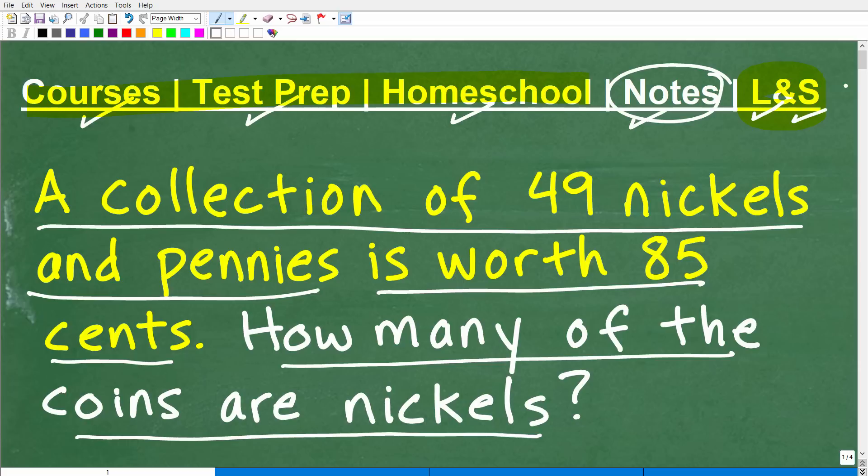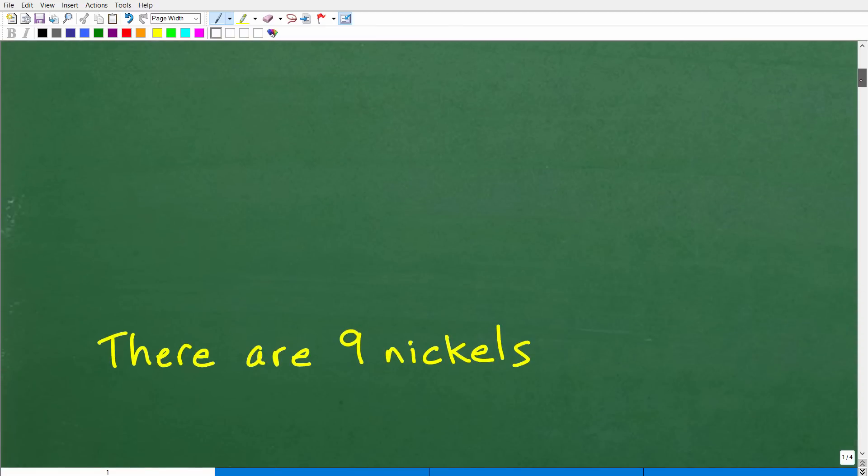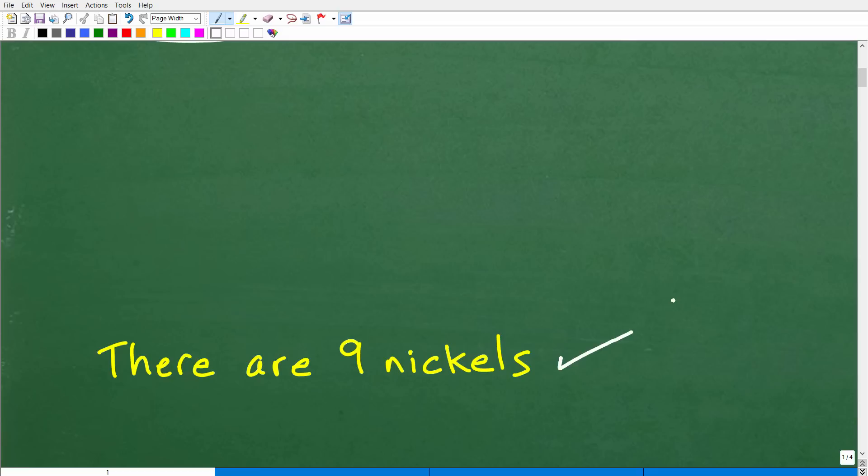But the problem, again, is a collection of 49 nickels and pennies. So we have nickels and pennies and we have 49 total coins. So that's how you want to interpret this. A collection of 49 nickels and pennies is worth 85 cents. So how many of the coins are nickels? Well, let's go ahead and take a look at the answer right now. The answer is there are nine nickels.